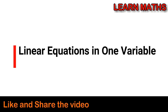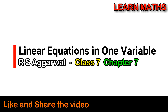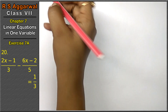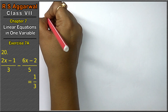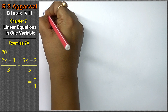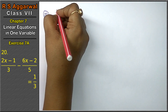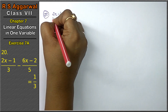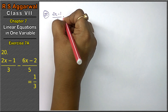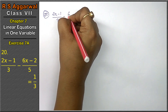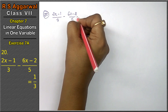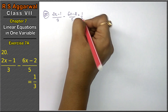Let's do question number 20 and 21 of the 7A exercise on linear equations in one variable. Question number 20 is: (2x minus 1) upon 3, minus (6x minus 2) upon 5, equals 1 upon 3.